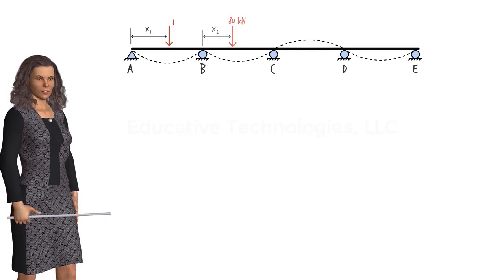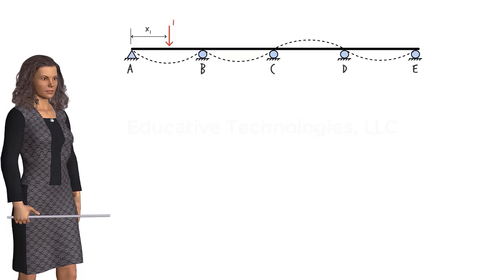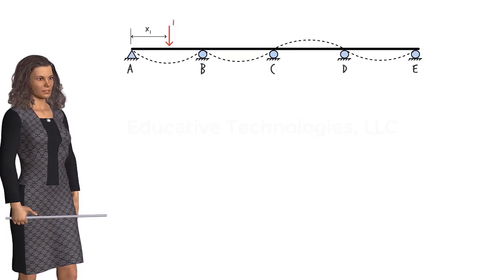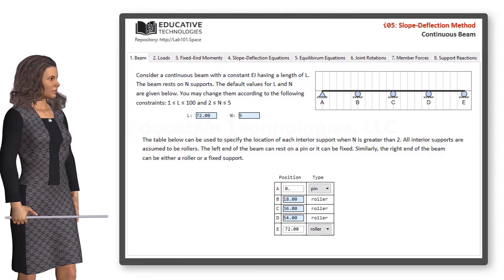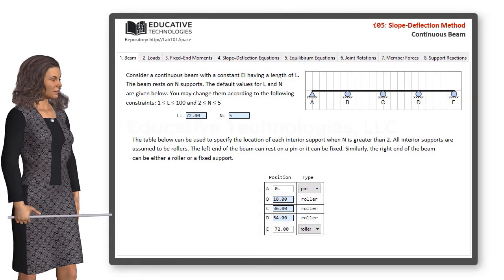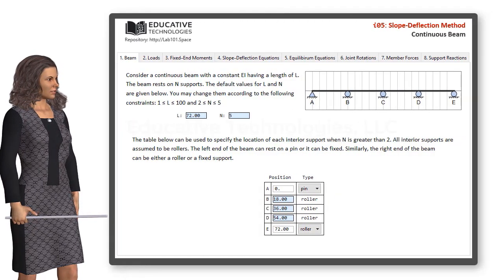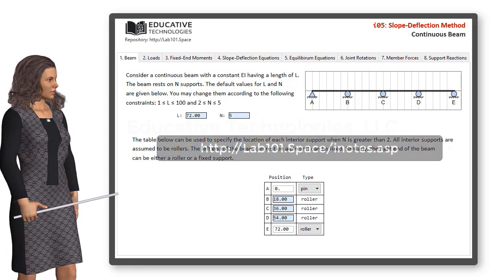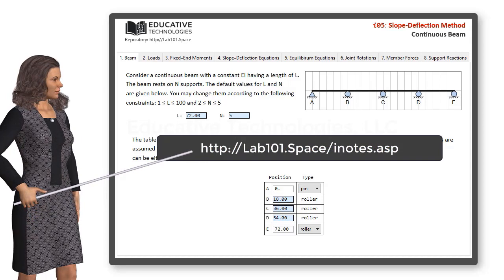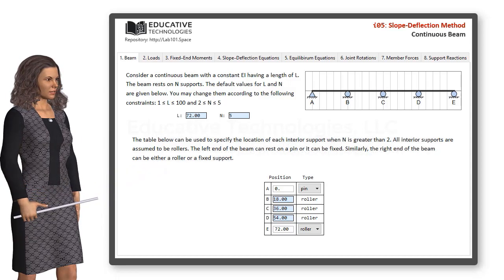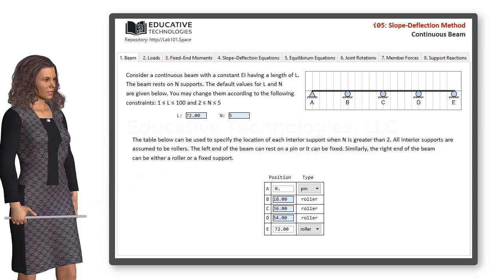Since this search technique involves analyzing the beam repeatedly, a rather time-consuming task, we have developed a software application that can facilitate this process. The app uses the slope-deflection method to analyze continuous beams. You can download it from our website at this location. Let's see how we can use the app to determine distances x1 and x2.